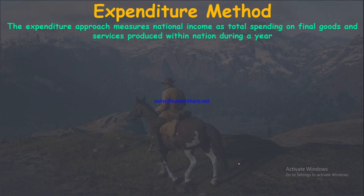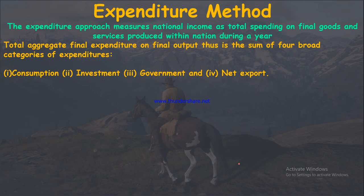Whatever we spend within a year on final goods and services is what forms the basis of the expenditure method. For example, when you go to a grocery store and spend on toothpaste, soaps, and shampoos, you are spending on final goods. National income via expenditure method is the sum of four broad categories: consumption, investment, government spending, and net exports.